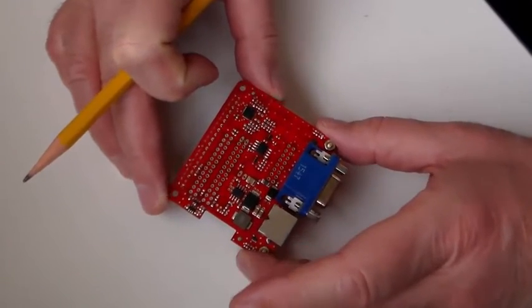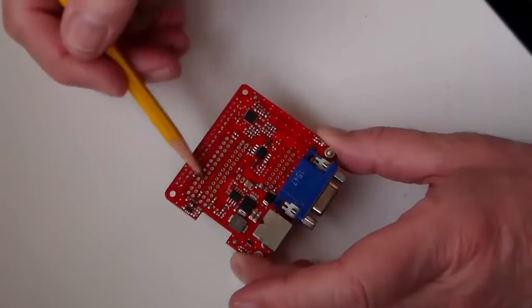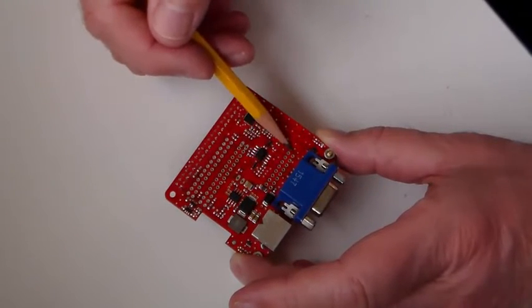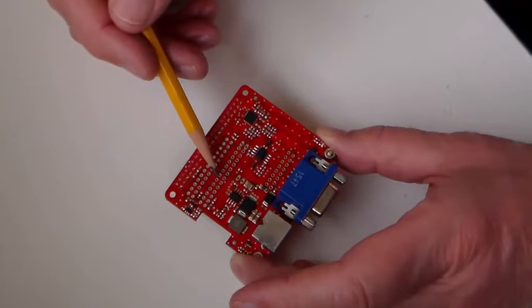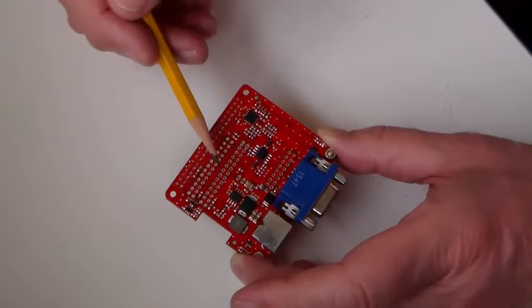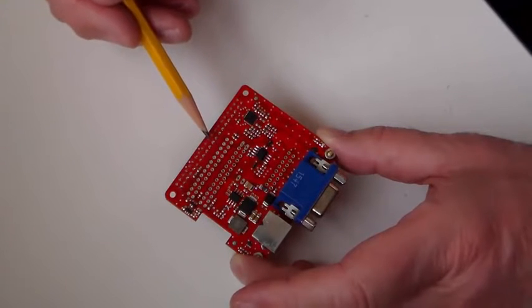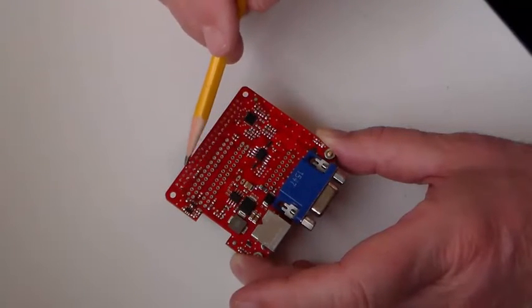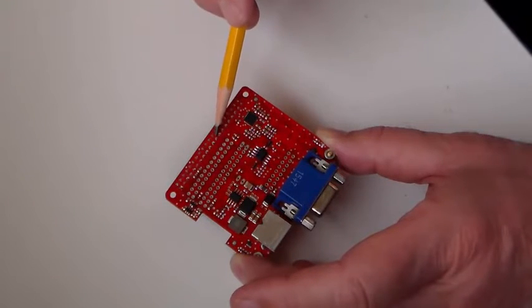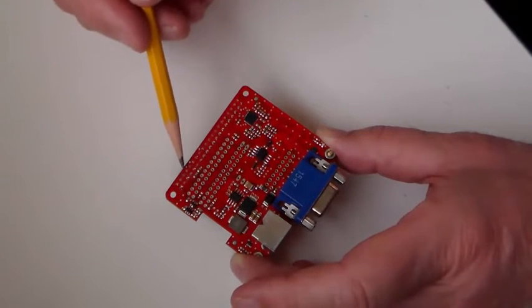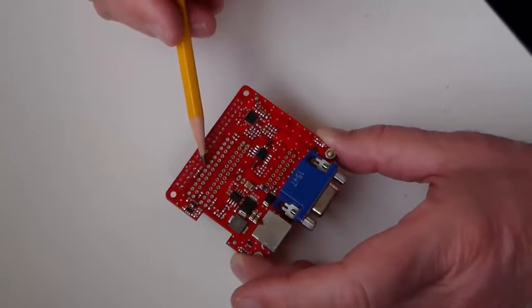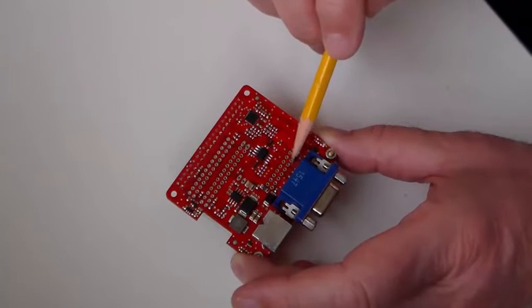One of the things that you'll notice right away is that there are a whole bunch of through holes on the board. There's two sets of them here, and another pair of holes here. The team at Northwest Digital Radio has given us access to all the general purpose input-output pins on the Raspberry Pi.